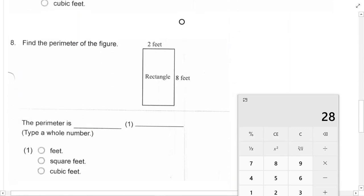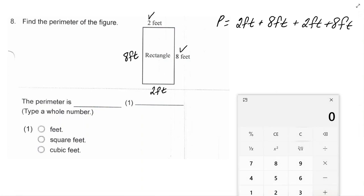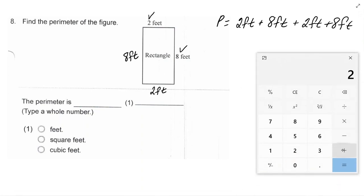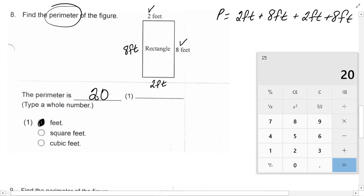All right, let's look at another one. Number 8 says, find the perimeter of this figure. Well, even though they only have the 2 and the 8, there are 4 sides to this rectangle. So, this side is 2 feet and this side is 8 feet. So, the perimeter is 2 feet plus 8 feet plus 2 feet plus 8 feet. So, clear my calculator, and I have 2 plus 8 plus 2 plus 8, and I get 20. All the way around is 20, and it is feet. Perimeter is always add all the sides.